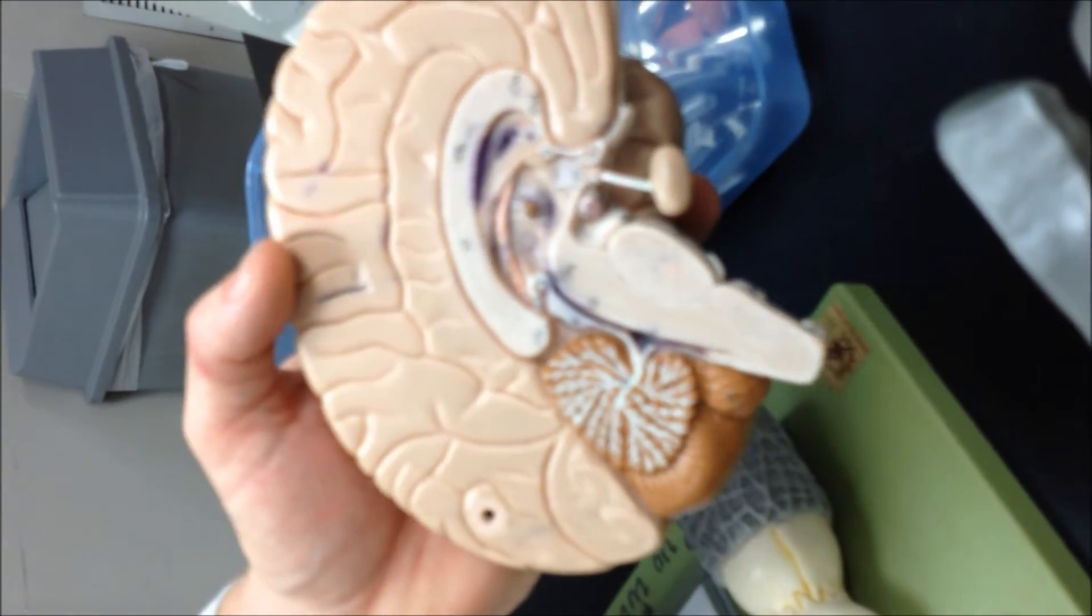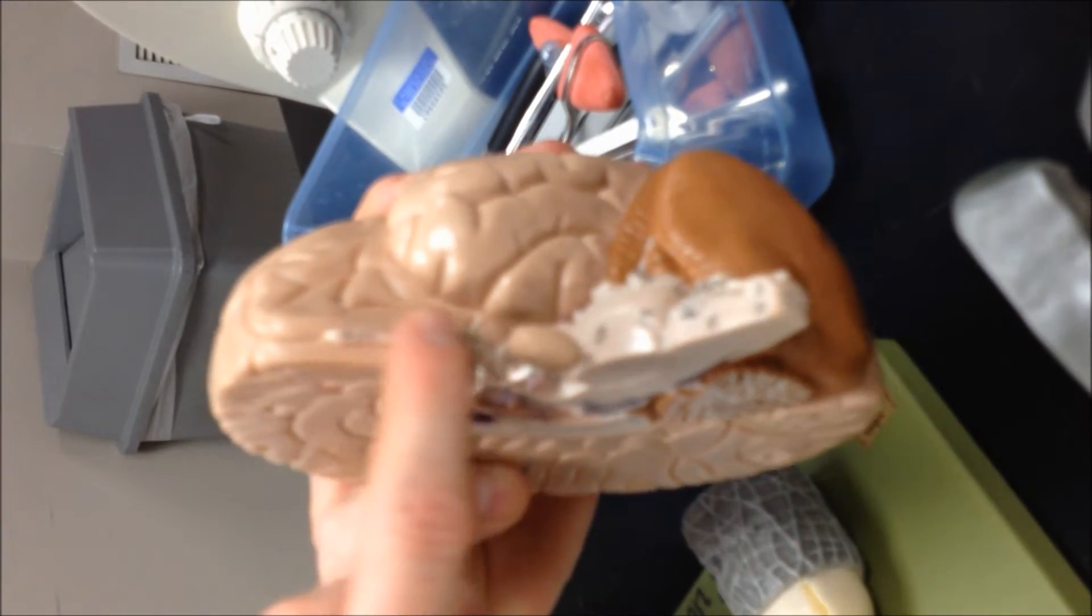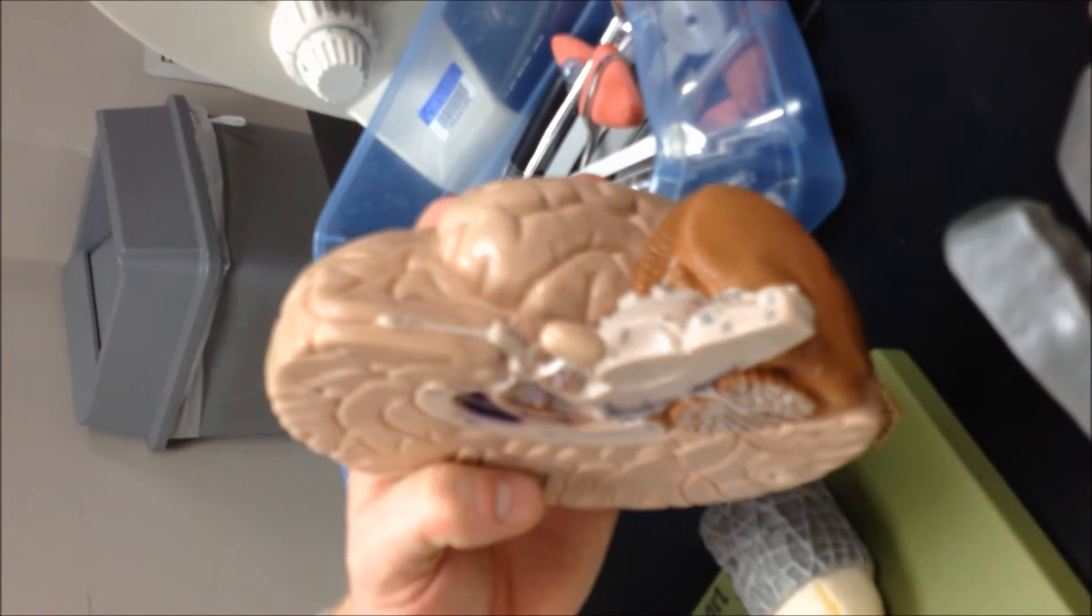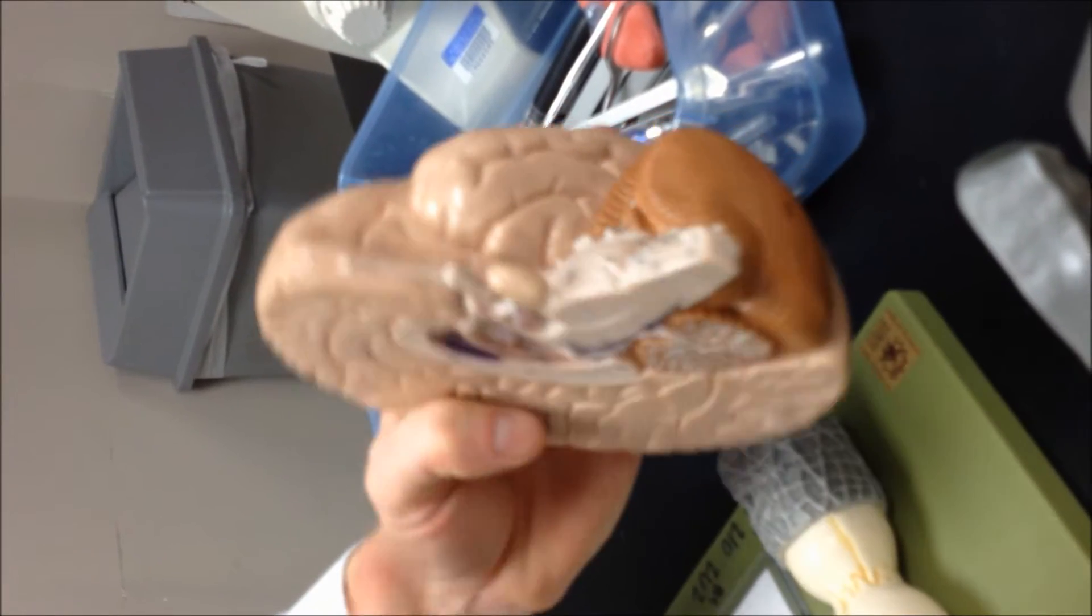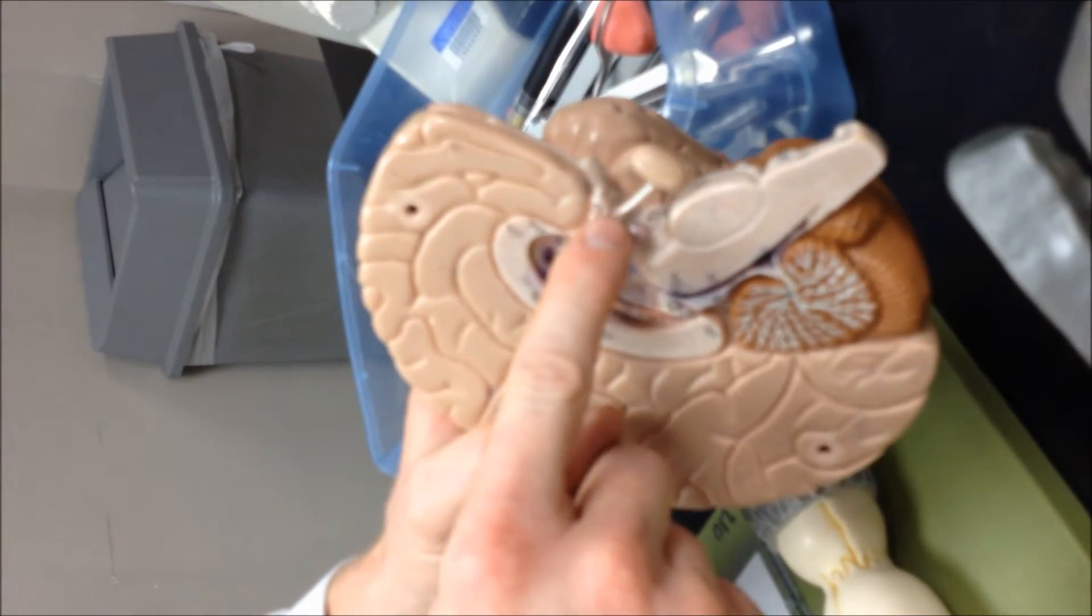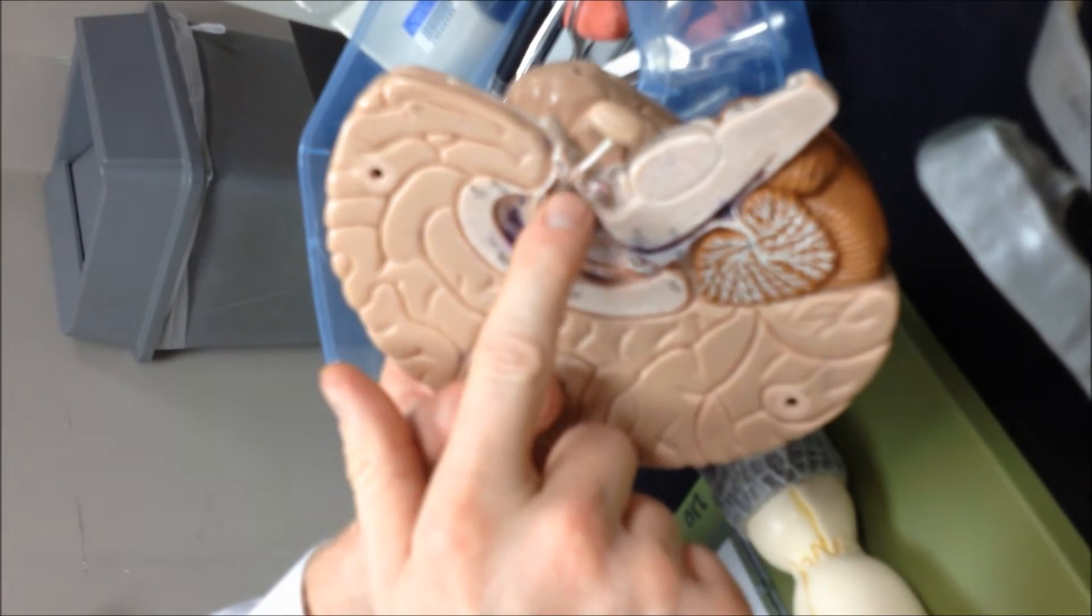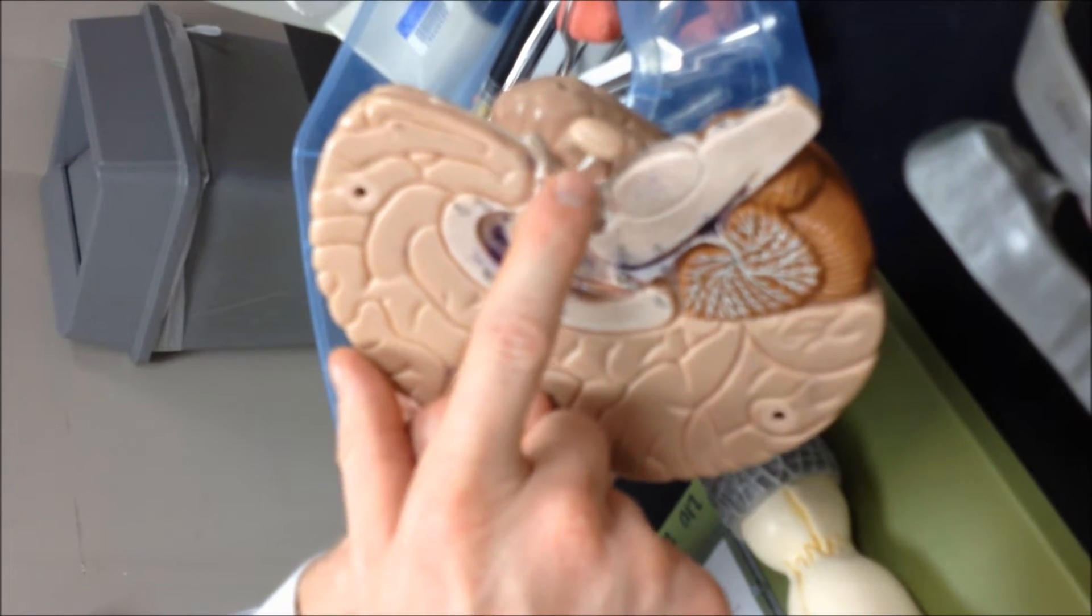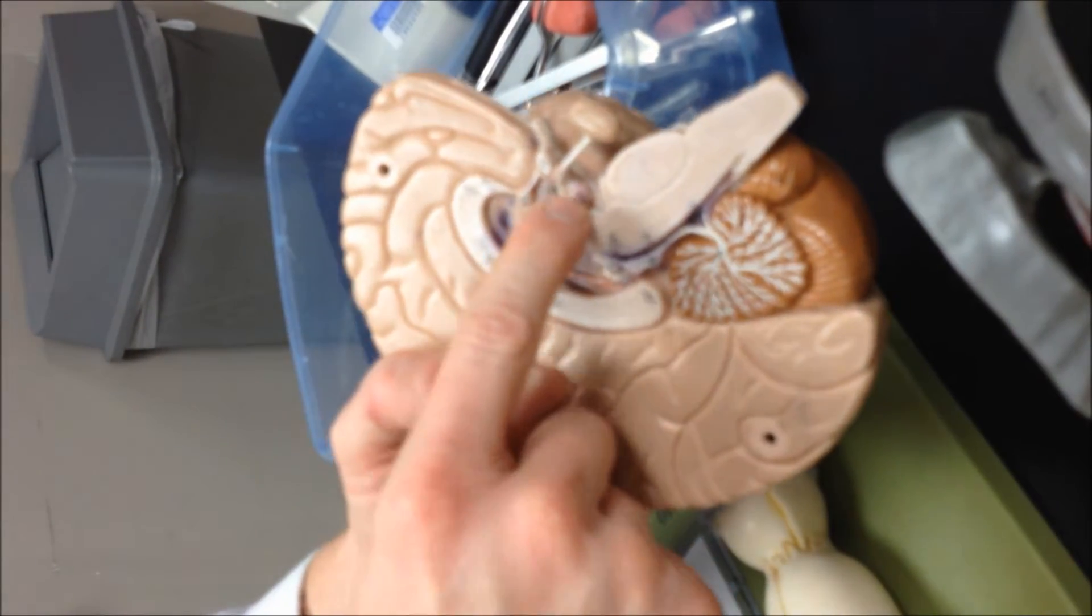All right. Below that would be the hypothalamus. Now if we move down to the bottom side here, we have the olfactory nerve, cranial nerve number one. And the optic nerve, cranial nerve number two. And this part where it comes back, where we cross over, is the optic chiasma. All right. So coming down from the hypothalamus, you have the infundibulum that holds the pituitary gland. And behind that, the bump there is the mammillary body.